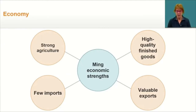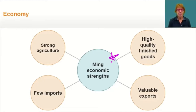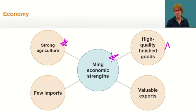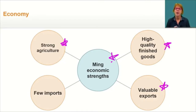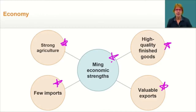China had a strong economy for many reasons. China did not need to import many goods because it had plenty of natural resources and a strong agricultural base, so there was always plenty of food. China also had highly skilled artisans who produced high-quality finished goods — everything from silk to porcelain — which were very valuable on the world market. Expanding world trade along the Silk Road and later by ship meant more customers for Chinese goods, and more exports meant fewer imports. China was growing very wealthy as a result of trade, which was rapidly increasing in the 1400s and 1500s.